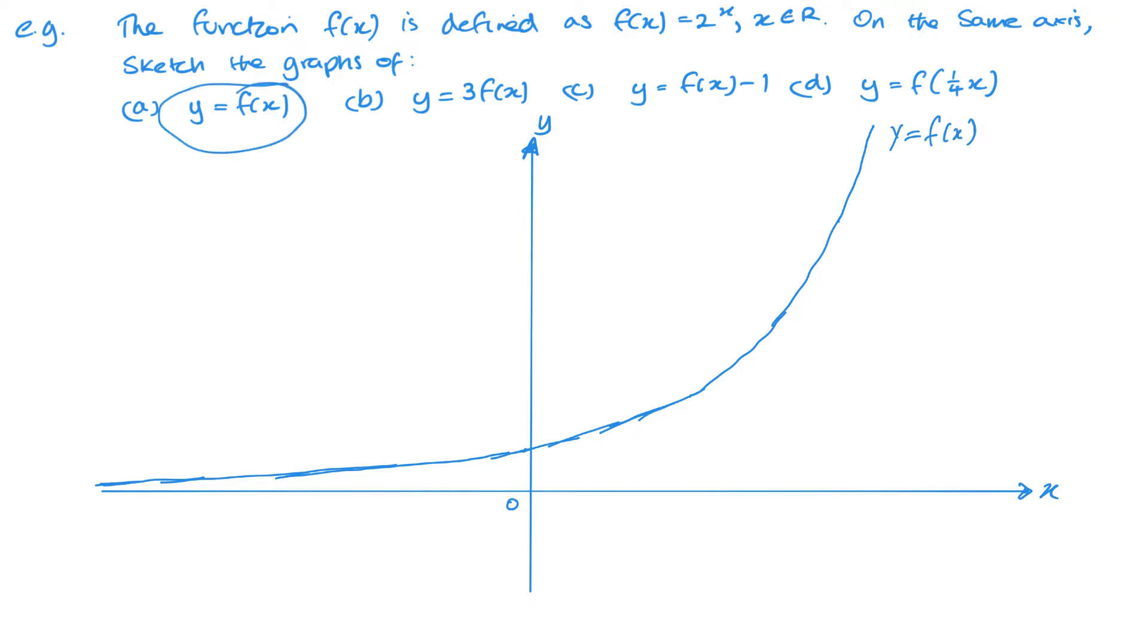Now, if I look at the second graph I want to draw here, y equals 3 f of x. That means that I need to multiply or stretch all my y values by a factor of 3. So, my first graph crossed the line at 1, the y-axis. My second graph is going to cross it at 3. So, it's got to be above it, but we're looking at something that's going to be a very much similar shape. It's just obviously it's going to get steeper a bit quicker than the other one. And then we're crossing at 3.